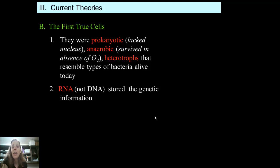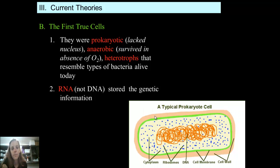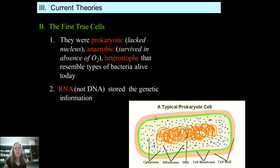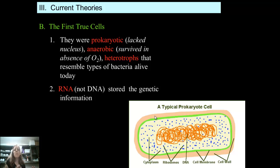DNA is a more complex molecule than RNA is. In a prokaryotic cell, because there is no nucleus, the DNA is just kind of floating around in the cytoplasm of the cell. The cytoplasm is the fluid. There are ribosomes, some cell membranes, some cell walls — some of the basic parts of a cell, but it's a very simple cell.